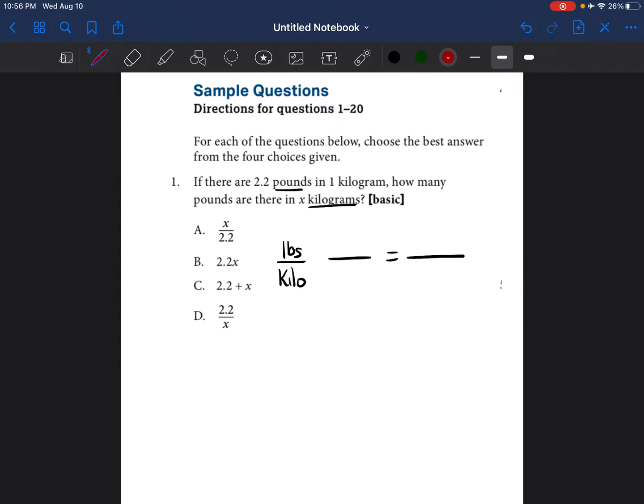And then I'm just going to go ahead and fill in my two fractions. So it's 2.2 pounds, so 2.2 on the top. And then it says is equal to one kilogram, so we're going to put one kilogram on the bottom and we have our first fraction already created.